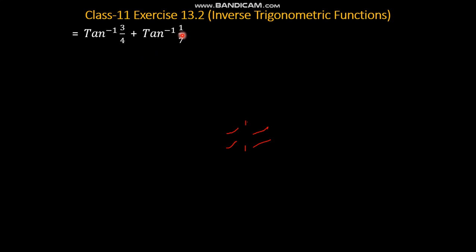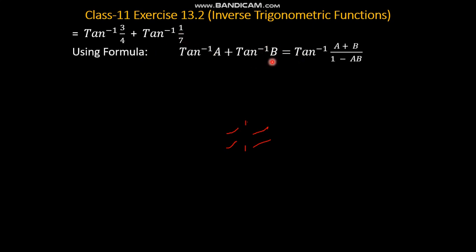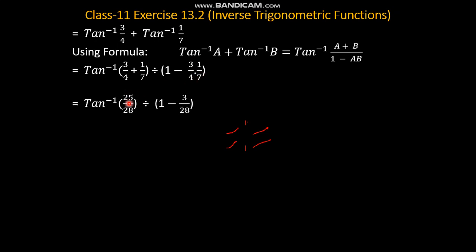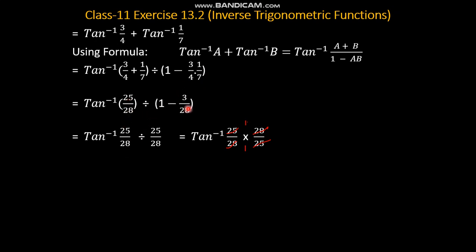tan inverse 3 over 4 plus tan inverse 1 over 7 पर formula apply करें: tan inverse a plus tan inverse b is equal to tan inverse a plus b over 1 minus ab. A की जगा 3 by 4 और b की जगा 1 over 7 आजेगा। यह देखें: 3 by 4 plus 1 over 7 यानि 25 over 28, divided by 1 minus 3 over 28. यह 28 minus 3 करेंगे तो 25 over 28. Reciprocal लें तो 28 और 28 से cancel, 25 और 25 से cancel — tan inverse 1 आगया, जिसकी value pi by 4 होती है। Hence proved.